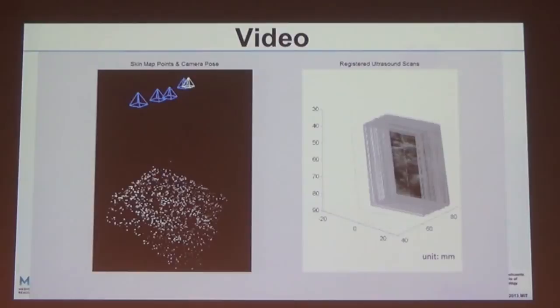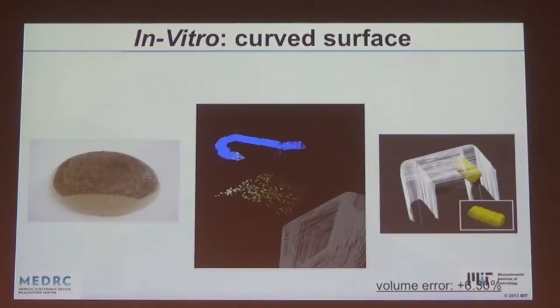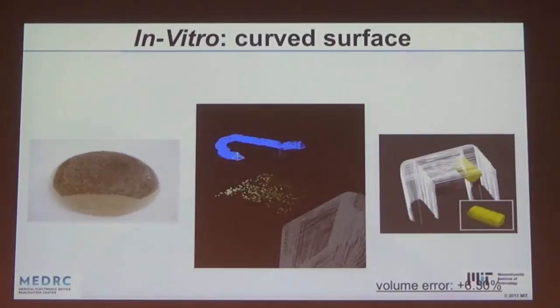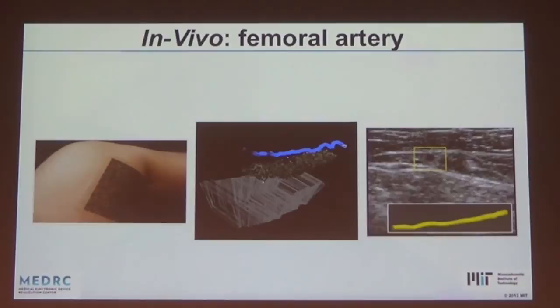First we validated this in vitro on phantoms — we printed some tattoos onto them. Some of the studies used phantoms with known volumes to see how well we could extract that volume. We achieved 6.3% error on a mobile volume tumor phantom. Moving on to something without ground truth — the femoral artery — we did a large scan, extracted the artery, and were able to do this at an extremely large volume along the leg and along the neck.